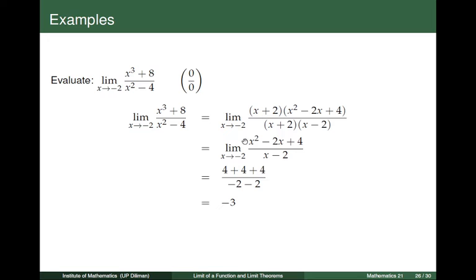Now let us compute the limit of this rational expression. Plugging in negative 2 to x, we get 4 plus 4 plus 4 divided by negative 2 minus 2, giving a denominator of negative 4. So we obtain negative 3 as the limit of x cubed plus 8 divided by x squared minus 4 as x tends to negative 2.